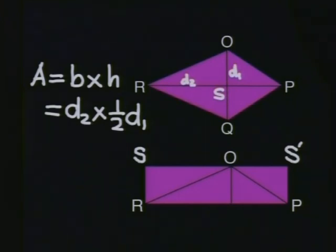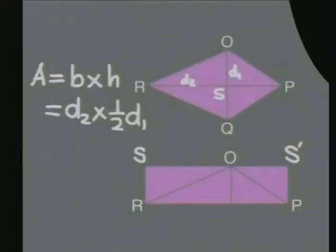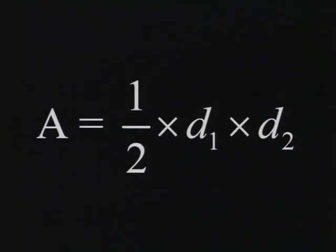Area equals D2 times half of D1, where D1 is the first diagonal and D2 is the second diagonal. The area of a kite is half times diagonal 1 times diagonal 2 of the kite.